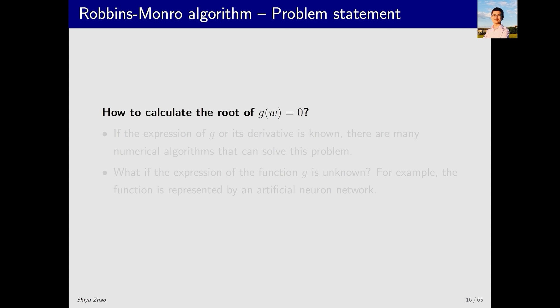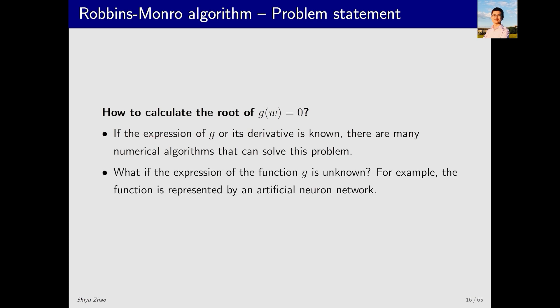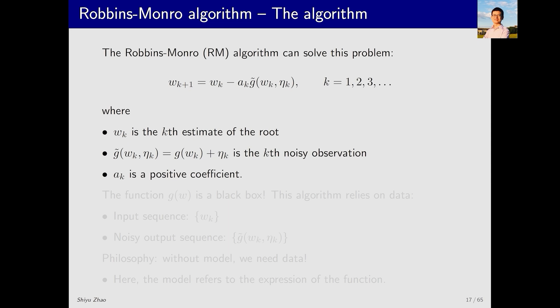How do we solve the equation g(w) equals zero? There are two scenarios. The first scenario is when the expression of g is known. In this case, there are many methods to solve it. What we consider here is a very interesting scenario where we do not know the expression of the function g at all. You might wonder how we can solve it without knowing its expression. Think about neural networks. Y equals g(w). The input is w and the output is y. Essentially, it represents a function g(w). A fully connected neural network can approximate a function, but we do not know its exact expression. So, our goal is to find the input w that results in a zero output. This can be solved using the Robbins-Monro algorithm.